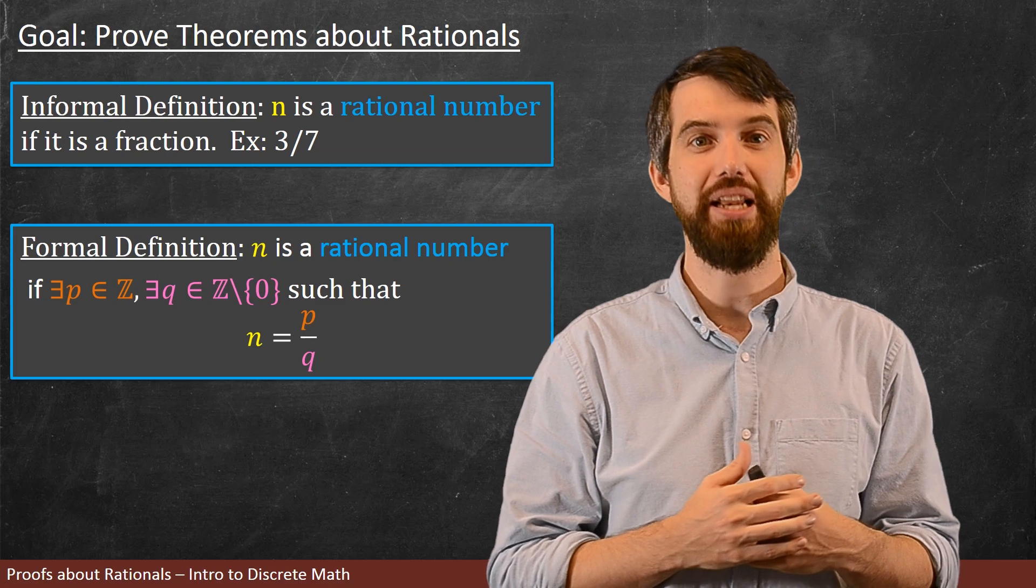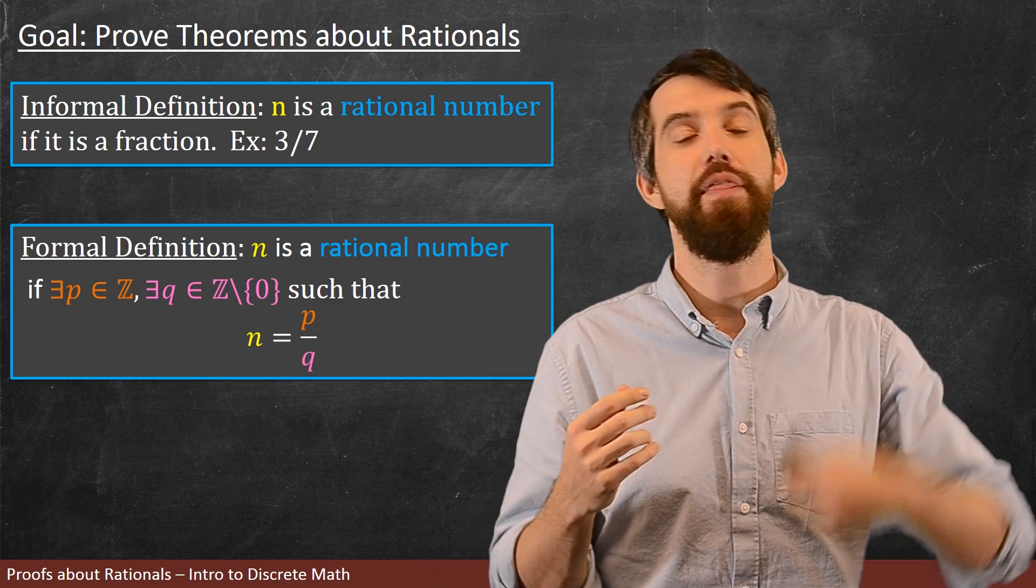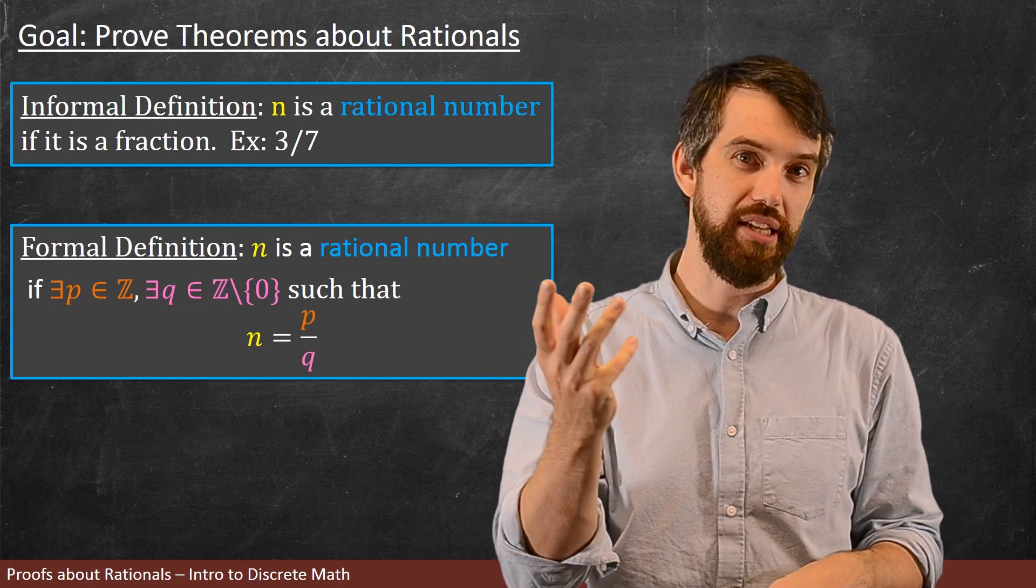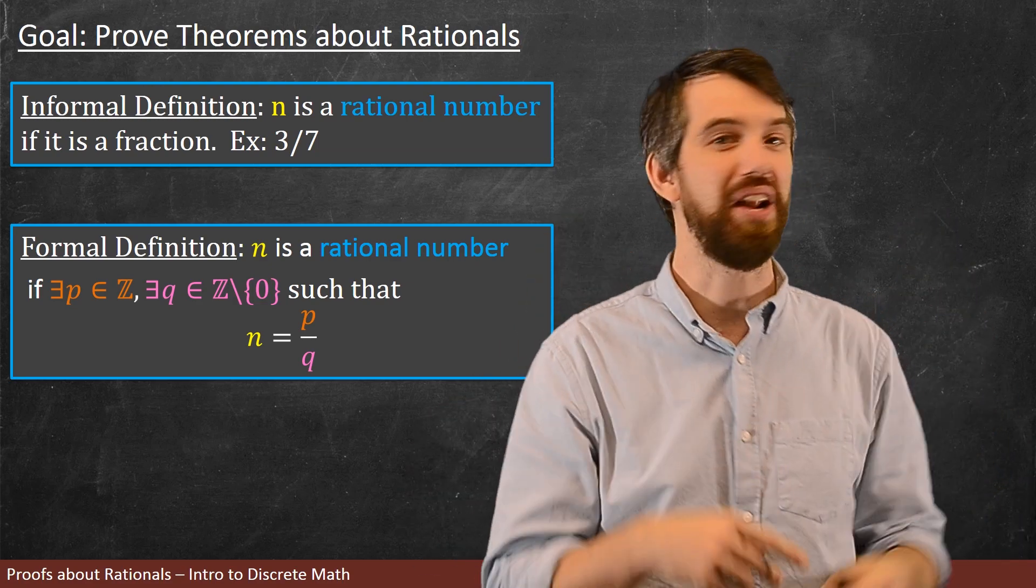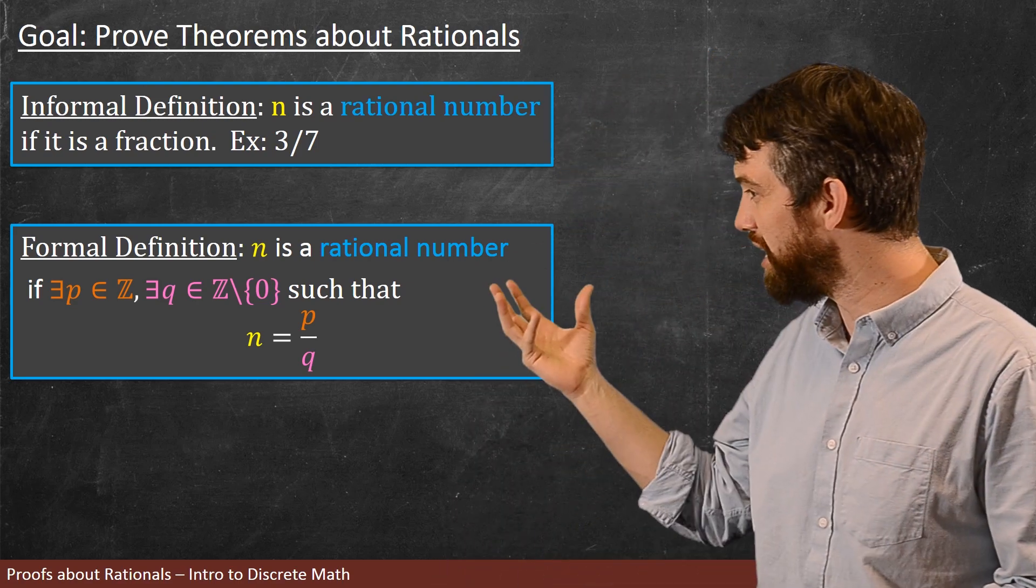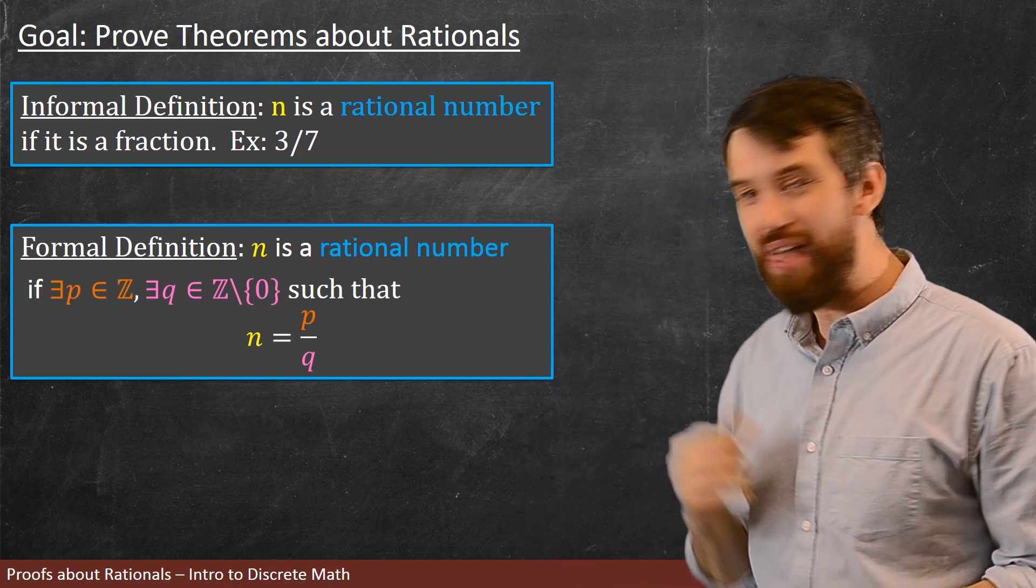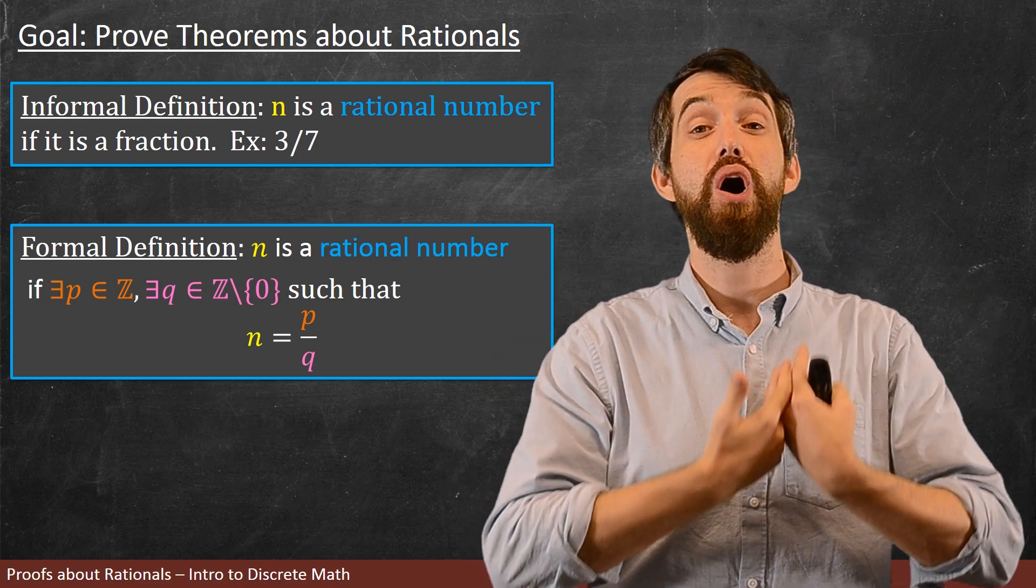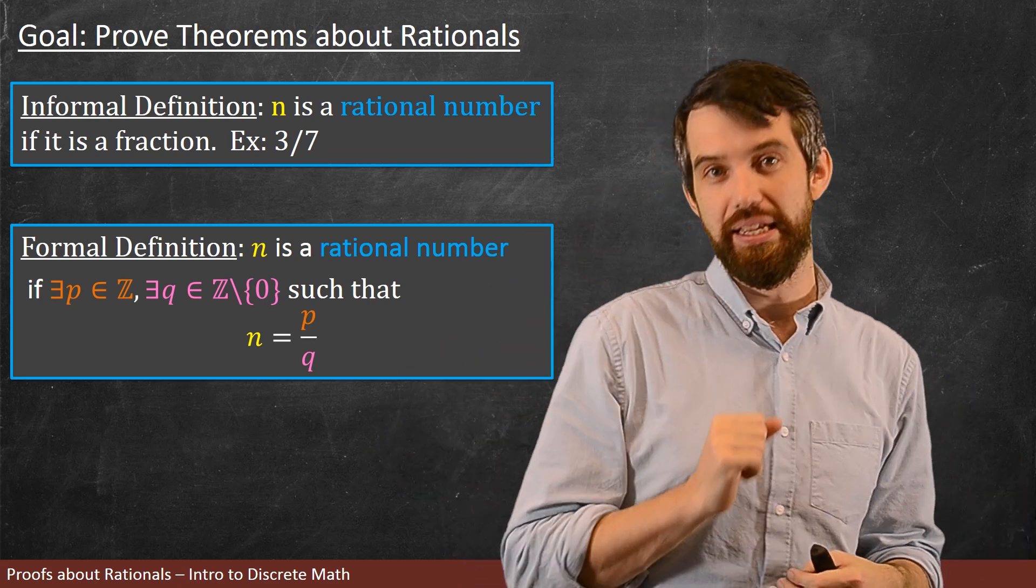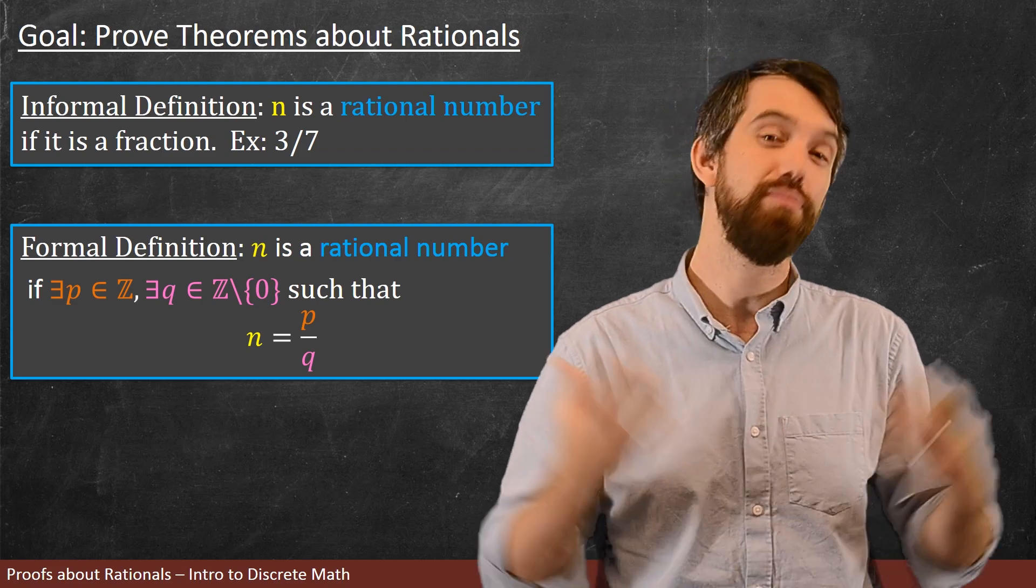But, in essence, what this particular definition is doing is it's making an existential claim twice. There is this p, and there is this q, where the p is in the integers, and the q is in the non-zero integers. By the way, I have a bit of a funny notation here. When I write the Z, and then the slash, and then the set brackets, and then the zero, what I mean by that weird notation is that this is the non-zero integers, or in other words, all of the integers minus, that's what the slash means, minus the set that only contains zero. So the non-zero integers.